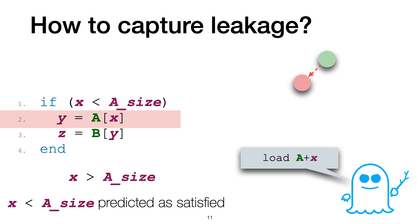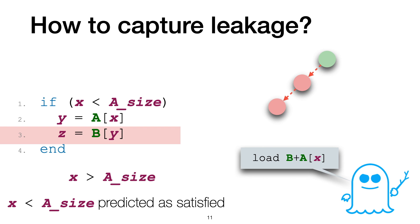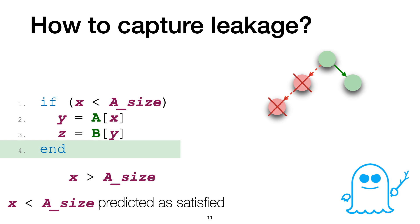Next, we execute the second memory access. Again, the attacker observes the address. Afterwards, we roll back the speculative transaction, discard all the changes to the program state, and jump to statement 4. Again, the attacker observes this. And finally, we return.